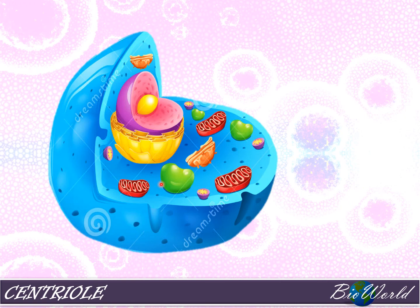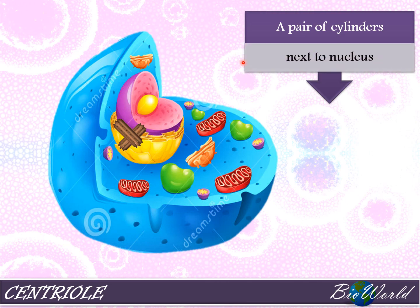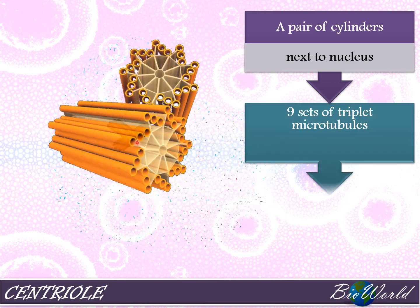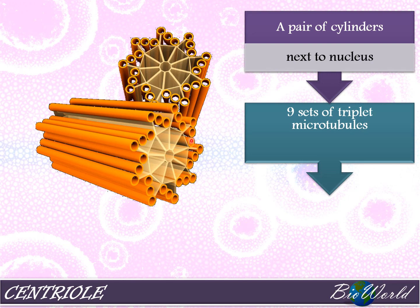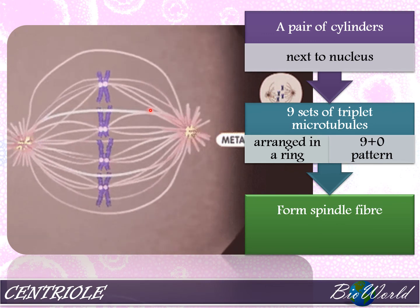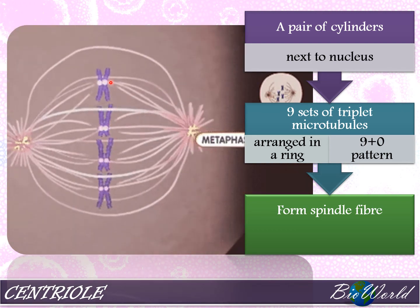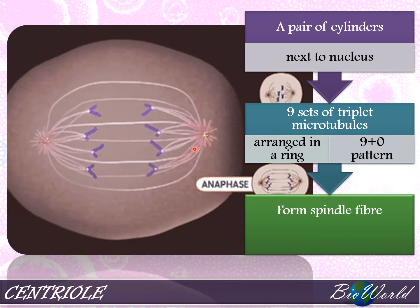Now let me discuss an organelle that is only found in animal cells — that is the centriole. The centriole is a pair of cylinder-like organelles located next to the nucleus, made up of nine sets of triplet microtubules arranged in a ring-like pattern, which we call the 9+0 pattern. The function of the centriole is to form spindle fibers, which are necessary to help pull chromosomes or chromatids to the opposite poles during cell division.